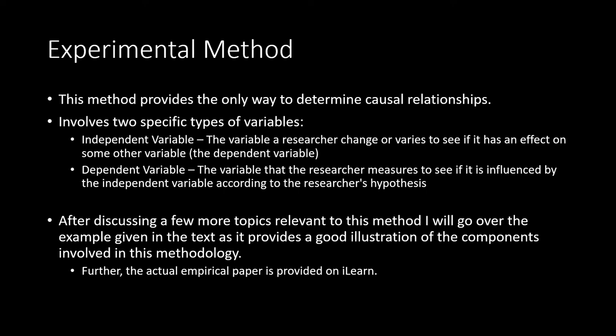Moving on to the experimental method. This method is the only one that provides us a way of determining causal relationships. The experimental method involves two specific variables: the independent variable, which is the variable a researcher changes or varies to see if it has an effect on some other variable; and the dependent variable, which is the variable a researcher measures to see if it was influenced by the independent variable, according to whatever hypothesis was generated. It is possible to have multiple independent and dependent variables, and we use slightly modified statistical techniques to deal with this.